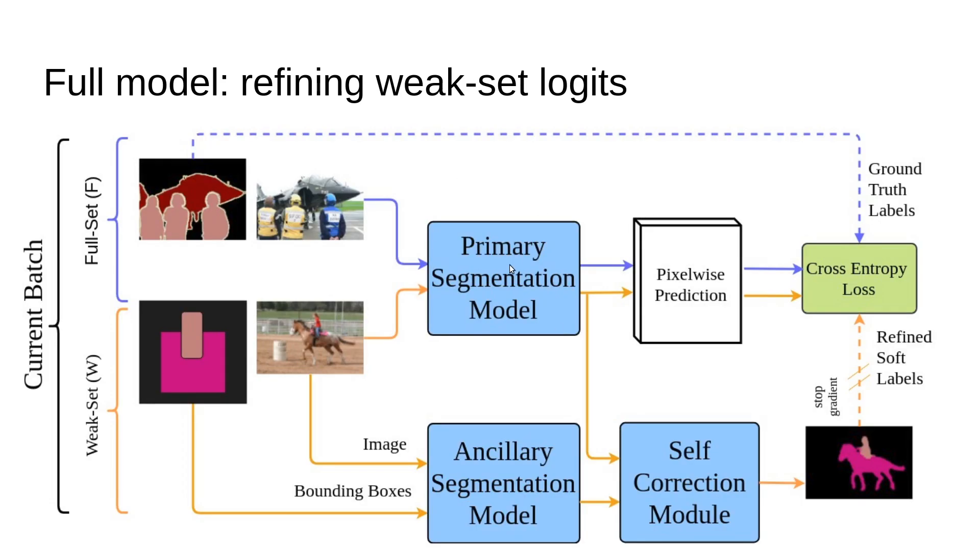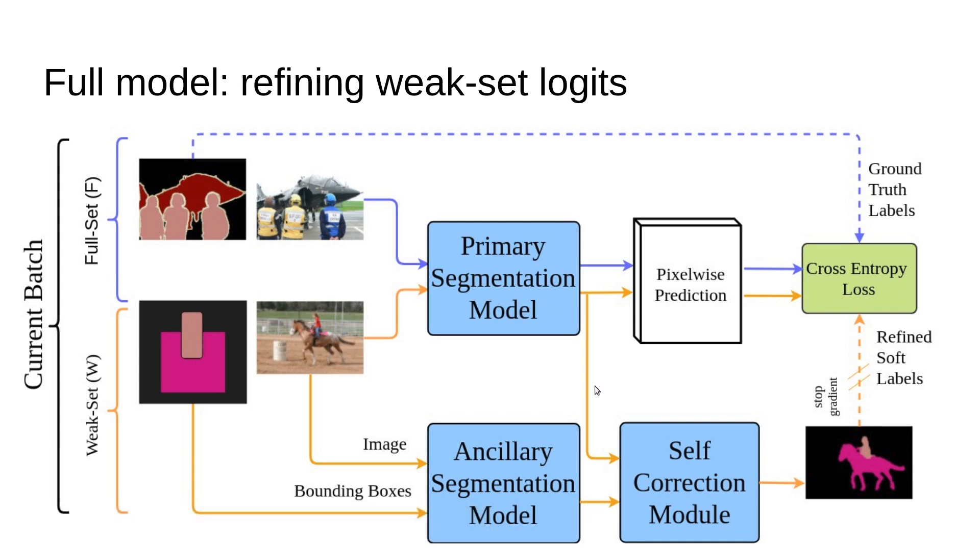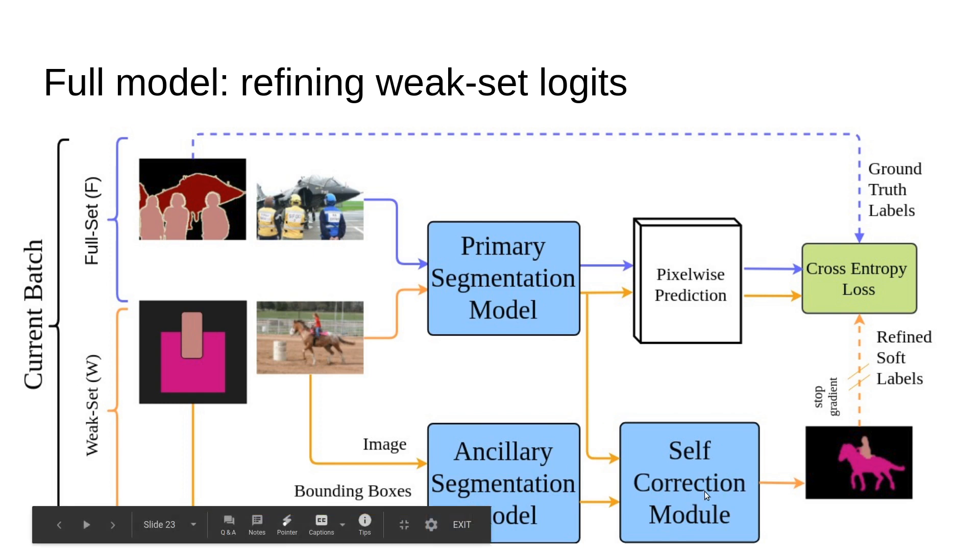The change now will be as follows: the normal image goes through normally, and if it's a weak image, we extract the fixed logits from the ancillary model and also take the current logits from the primary model for this weak image. We have some self-correction module that takes two kinds of logits, generating new logits to be used as our ground truth. This is refined software.